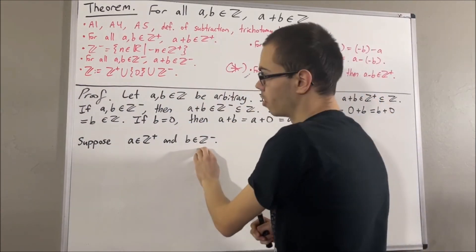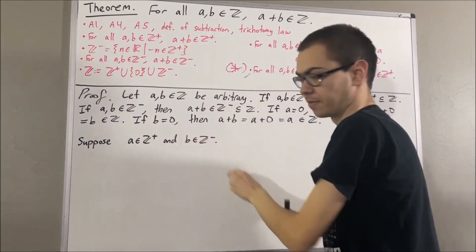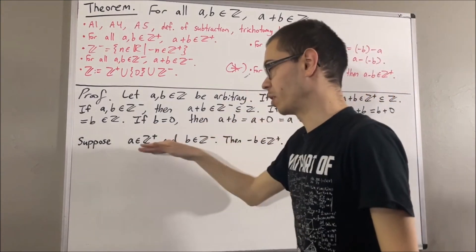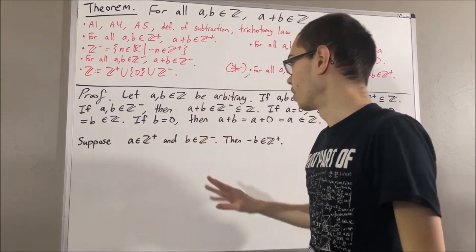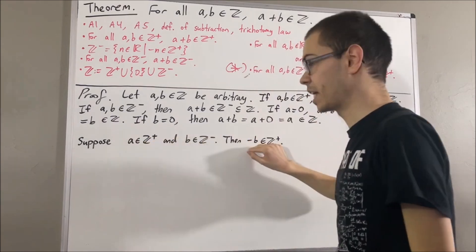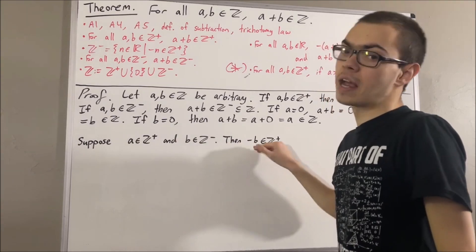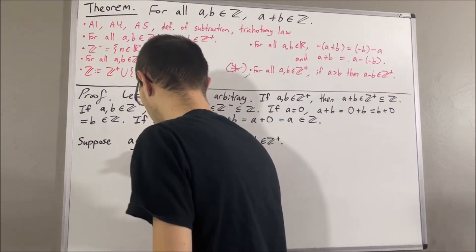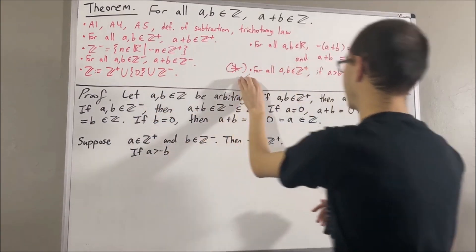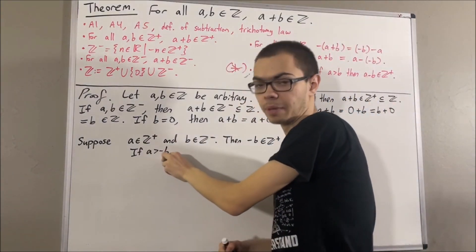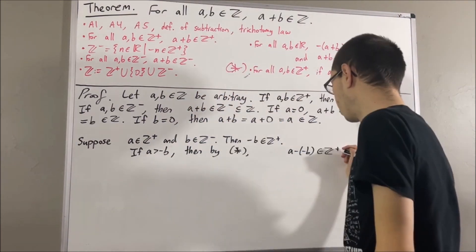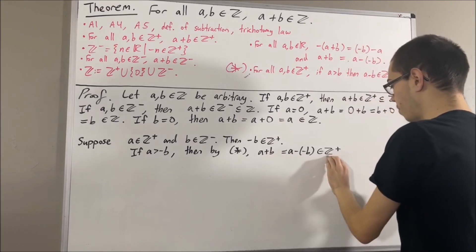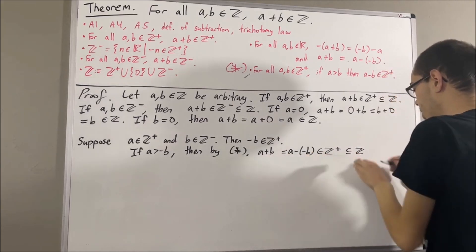Since b is a negative integer, by definition of the negative integers, the negative of b is a positive integer. We will further split this into three sub-cases using the trichotomy law: a is greater than the negative of b, a equals the negative of b, or a is less than the negative of b. If a is greater than the negative of b, then by star, a minus the negative of b is a positive integer. But a minus the negative of b equals a plus b, so a plus b is a positive integer, and thus an integer.